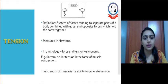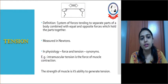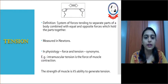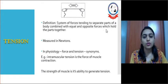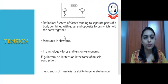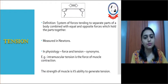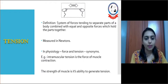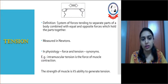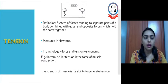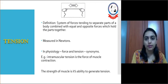The next principle is tension. Tension by definition is a system of forces tending to separate parts of the body, combined with equal and opposite forces which hold the parts together. It is measured in newtons because tension is a force. In physiology, force and tension are usually used as synonyms; for example, intramuscular tension is the force of muscular contraction. The strength of a muscle is its ability to generate tension.